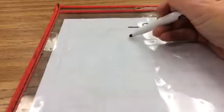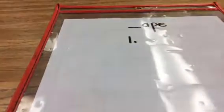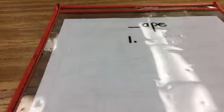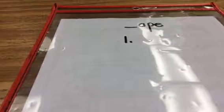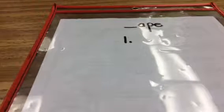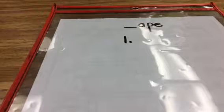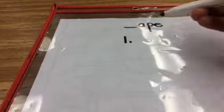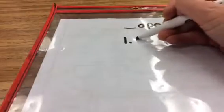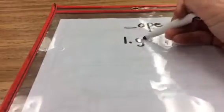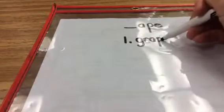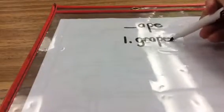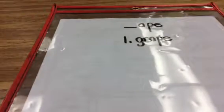For number 1, try to spell grape. Grape. I like grape soda. So it's gr- then ape. Grape.